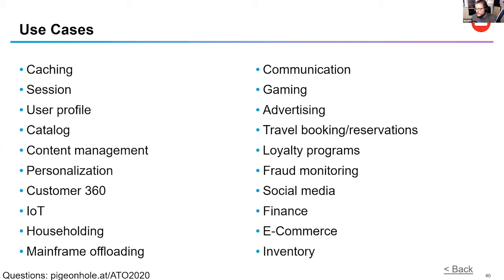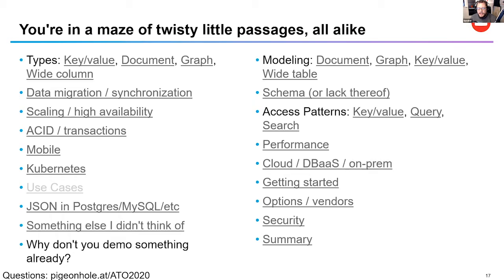There's a comment that if you find yourself adding new columns to a table and most of the data is blank, you might want to think MongoDB — or more generally, a document database. That's not a bad rule of thumb. You might also look at a wide column database if you have a lot of sparse or null data, but it depends on your data access patterns.